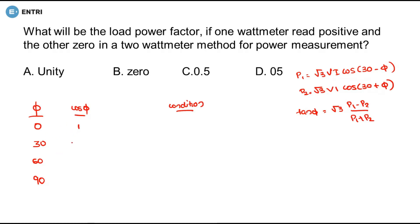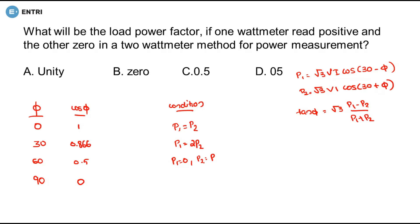Cos 0° is 1. Cos 30° is 0.866. Cos 60° is 0.5. Cos 90° is 0. From the first column, it equals 2P. Cos 2P equal to Y — the answer is 0 because one wattmeter reads a positive value, and the other is equal double Y, meaning it is negative. So P1 is minus P2.